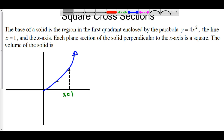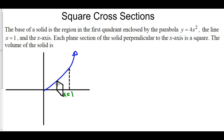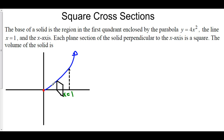Imagine that we have one cross-section right here, coming out of the board. The side of our cross-section is the same as the height of our cross-section. We are taking the integral from 0 to 1 of the area of these cross-sections. The area of a square is side squared, and the side of this square is just the function value at x, which is 4x squared.